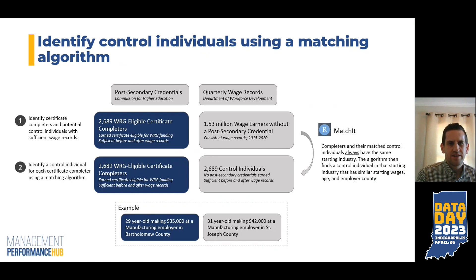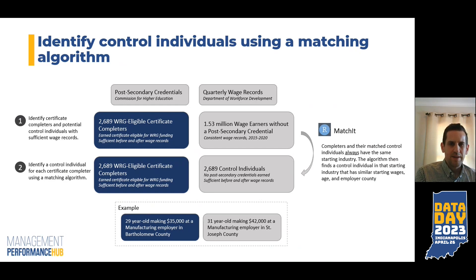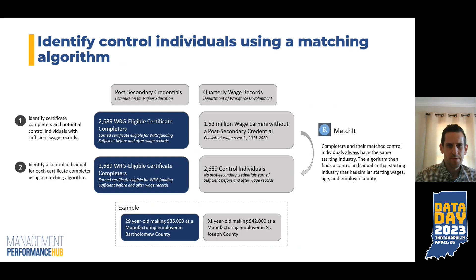To find these control individuals, we first start with data on post-secondary credentials from the Commission for Higher Education and quarterly wage records from the Department of Workforce Development. I want to give a shout out to these other state agencies — we're really grateful for your partnership and sharing of data that makes this work possible. From those data sets, we can identify certificate completers and potential control individuals with sufficient wage records: just under 2,700 Workforce Ready Grant eligible certificate completers and 1.5 million wage earners that haven't earned a post-secondary credential, both with consistent before and after earnings data.